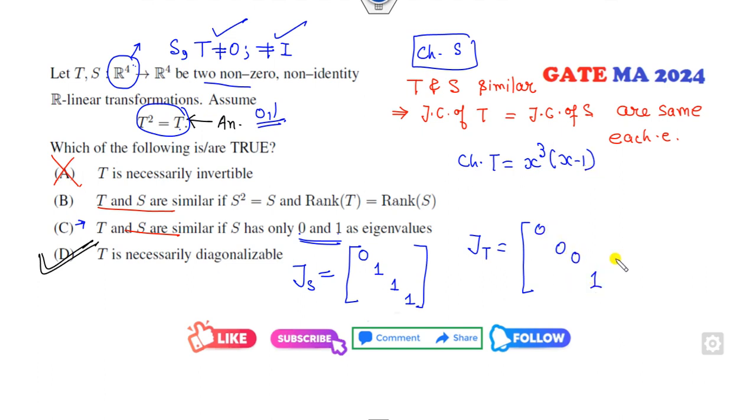This is the Jordan block corresponding to eigenvalue 0. This is the Jordan block corresponding to eigenvalue 1, and you can see they are not same. I consider this is one block, this is two blocks, and this is only one block. So the Jordan block of S is not equal to the Jordan block of T always. That means it is not always similar.